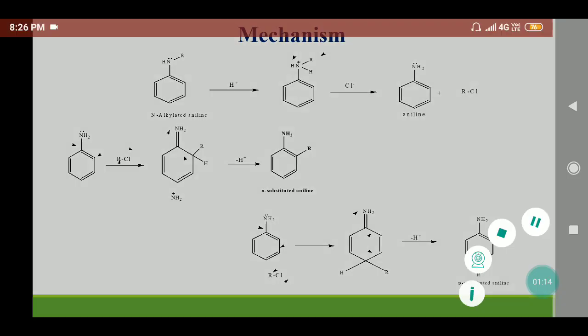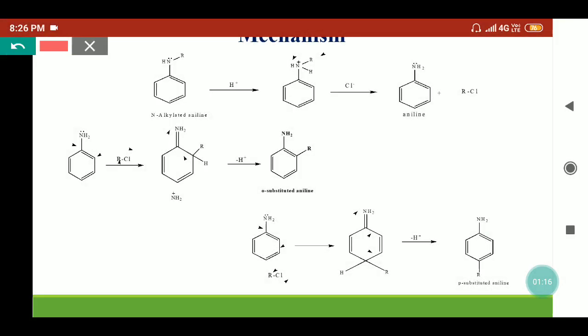Coming to the mechanism part, n-alkylated aniline when treated with H+ ions, that is acidic media HCl, then H will protonate the nitrogen. So we will get a positive charge on nitrogen and in presence of chloride ion, this alkyl group will be replaced to give alkyl chloride and aniline.